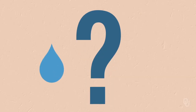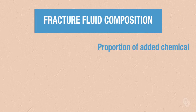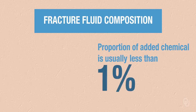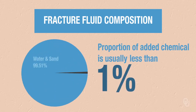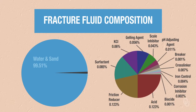How much water and how much chemicals? The proportion of added chemical is usually less than one percent of the total. As with most things related to oil and gas operations it varies, but generally it is less than one percent. The proportions shown here are averages, and the various types of chemicals and their purposes are also shown. Besides water, the major constituents are acid, friction reducers, and surfactants.